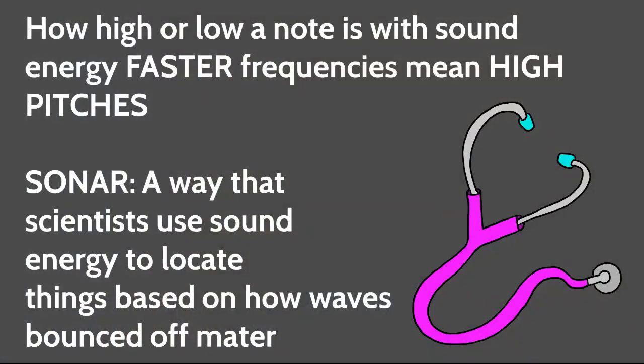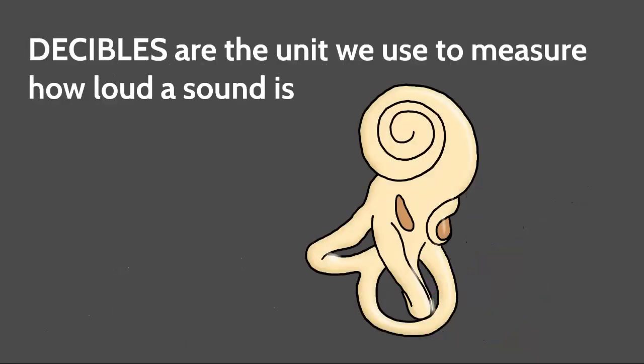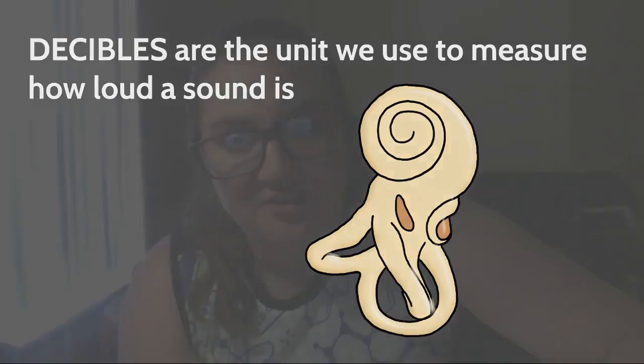Compression wave is the name of the game. How fast it's moving affects the pitch — how high or low it is. We create those pitches by how fast we're moving that matter. Another thing that's good to note is that sonar is the way that scientists use this technology — they use this information to locate things based on how waves bounce off of matter. Decibels. Let's pause and review our units.